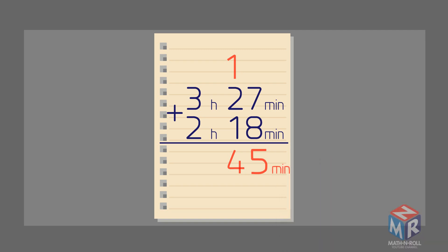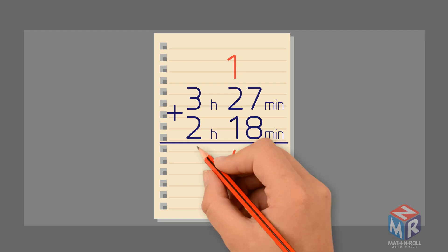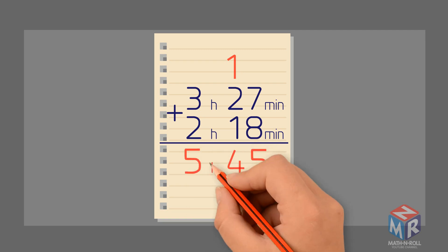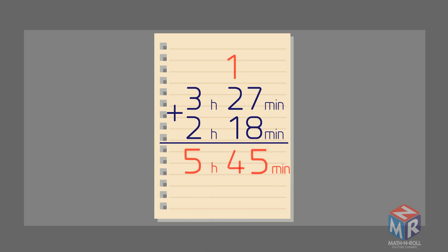Now we need to add the hours column. 3 plus 2 equals 5 hours. So the answer is 5 hours and 45 minutes.